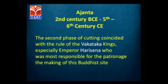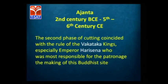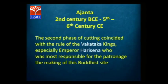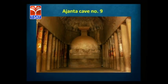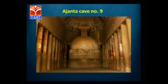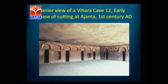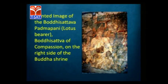Moving on to Ajanta and Ellora. Ajanta: keep in mind 2nd century BC to 6th century AD. It was largely done under the Vakataka kings and Harisena was an important king whose patronage is very important for this site. There are two basic architectures: Chaitya, which is a prayer hall, and Vihara, which is like a hostel for monks with small rooms, stone beds, and stone pillows.